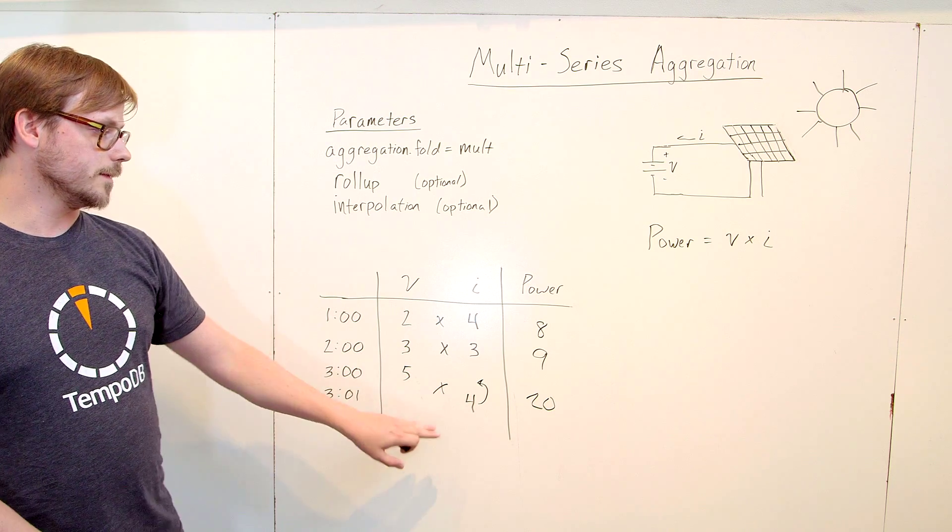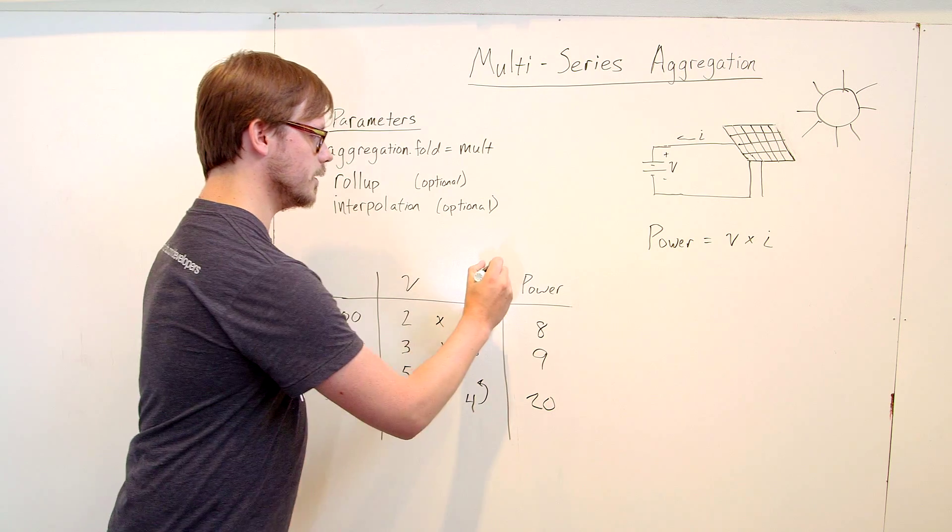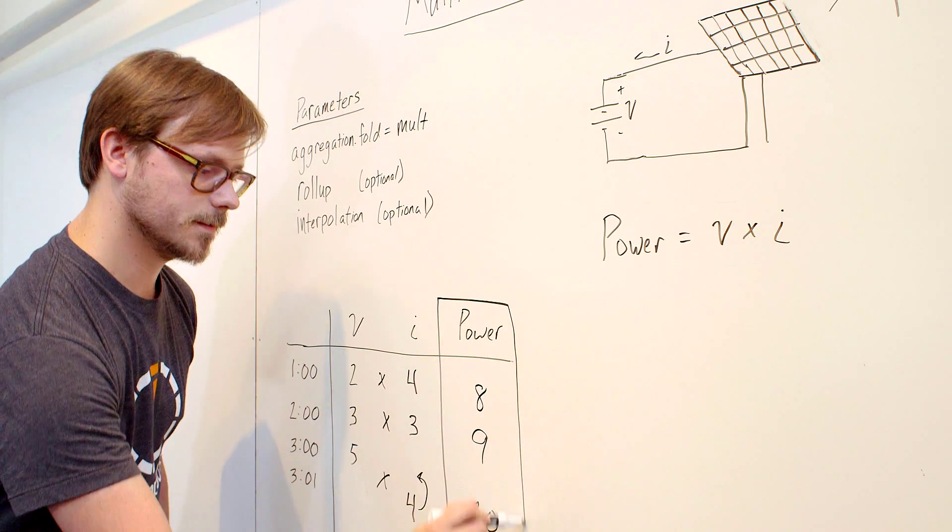So this endpoint takes these two input series, the voltage and the current, multiplies each of the values, and the output is a single series, which is this power column.